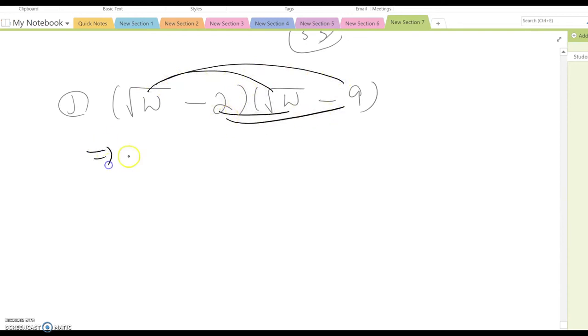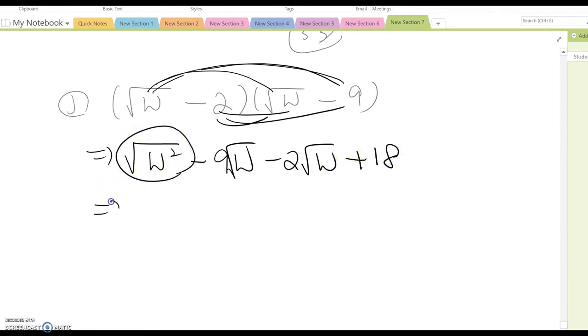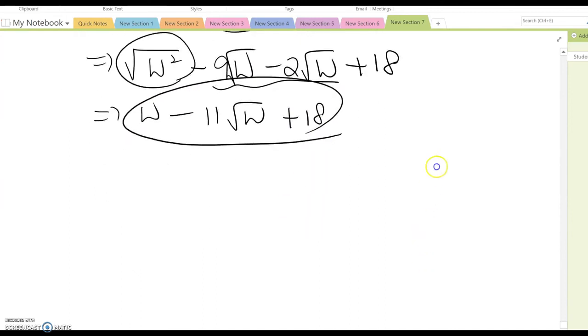And this becomes square root W squared minus 9W minus 2 square root W times square root W plus 18. Then this becomes W, and the total becomes 11 root W plus 18. That should be the answer for this problem.